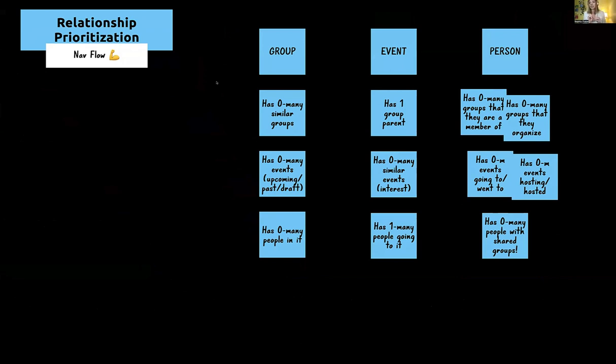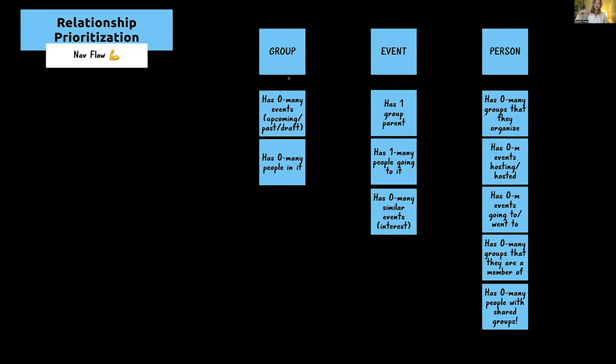Now we get into the nav flow. We go back to our nested object matrix — probably in Notion or Airtable by this point, not Keynote. We've explored each nested object and now at prioritization, we can prioritize them, deciding which relationships should be near the top and which near the bottom. Some nested objects might fall off completely — maybe they're phase two, or research shows people don't care about them.